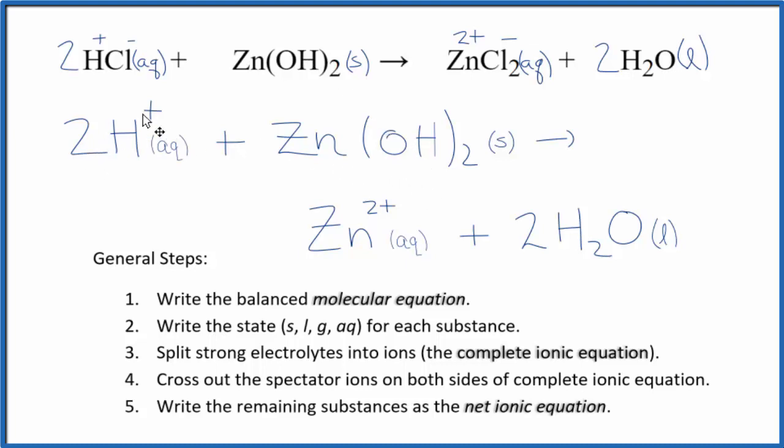You'll note that charge is conserved. We have two times one plus, that's two plus. So in the reactants, we have two plus. On the products, we have the two plus with the zinc. If you count the atoms up, they'll be balanced as well. This is Dr. B with the balanced net ionic equation for HCl plus Zn(OH)2. Thanks for watchin'.